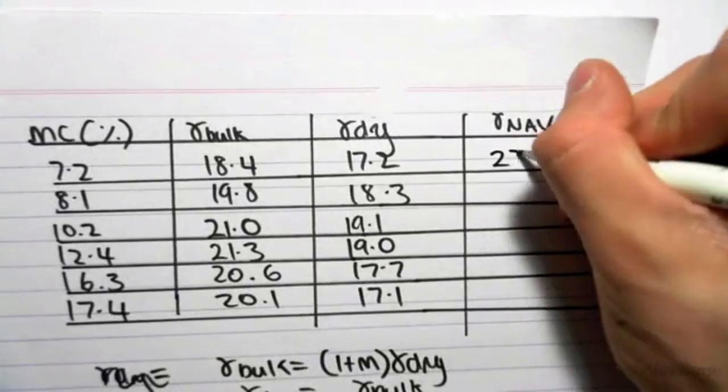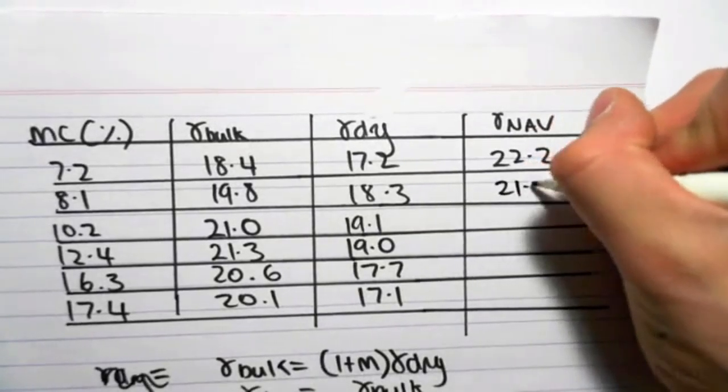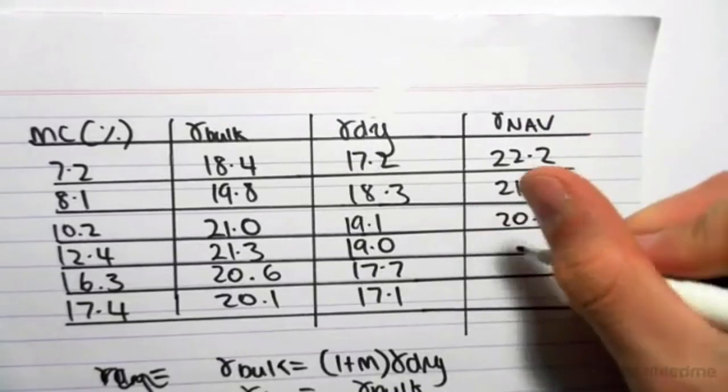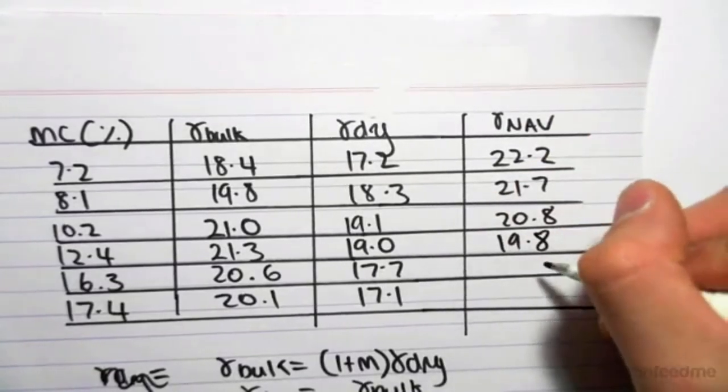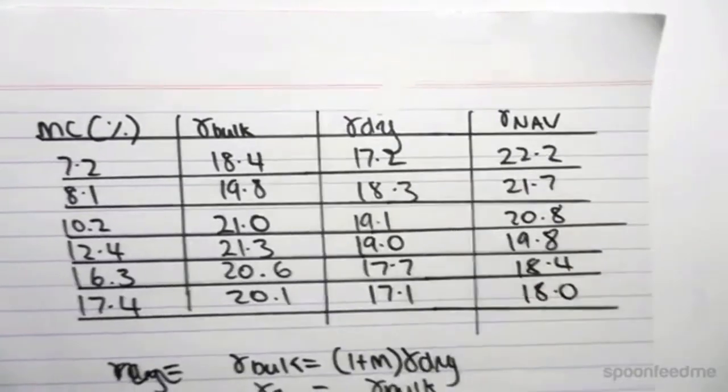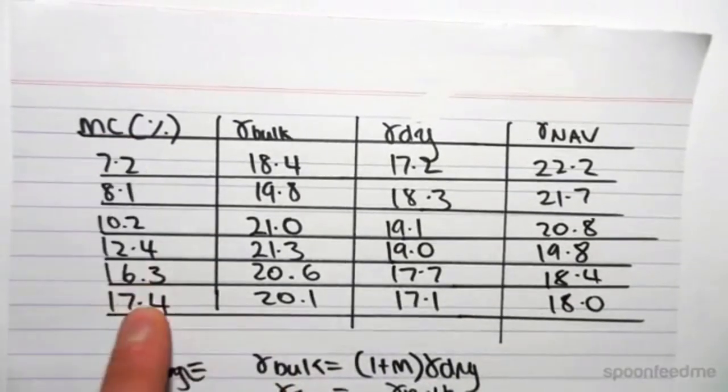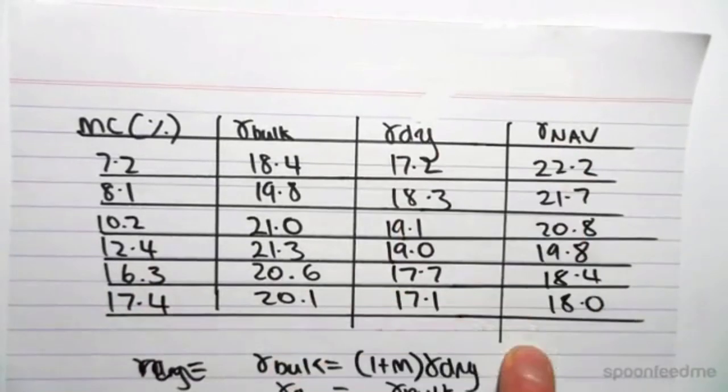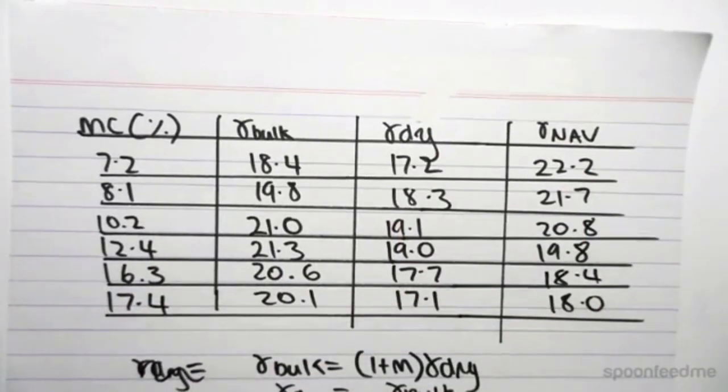I can go ahead and put that up there. Once again, I've calculated all these values already, so I'm just going to pop them in. So now we're going to use this information, the moisture contents, the dry unit weight, and the gamma of the no air voids line, to draw a graph to calculate the optimal moisture content, as well as the maximum dry unit weight.